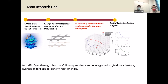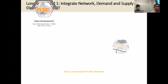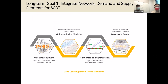Now I'm back to topic number three: how we maintain the internal consistency for this multi-resolution model, particularly for the large-scale network. In traffic flow theory, the car-following model can be integrated to produce the steady-state aggregated macroscopic speed-density relationship. To maintain this integrated network with demand-supply elements for the smart city is always our dream. Our long-term goal is to integrate open source development, multi-resolution modeling, simulation and optimization using the mesh network, and then provide decision support for the large-scale system.